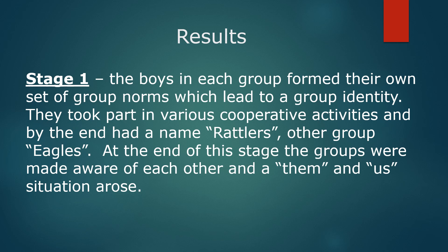Moving on to the results. For stage one, there was evidence that the boys in each group formed their own group norms, and it led to a group identity. They took part in cooperative activities and named themselves the Rattlers and the Eagles. At the end of stage one, the groups were made aware of each other, and a very them-and-us kind of situation arose between the two groups.